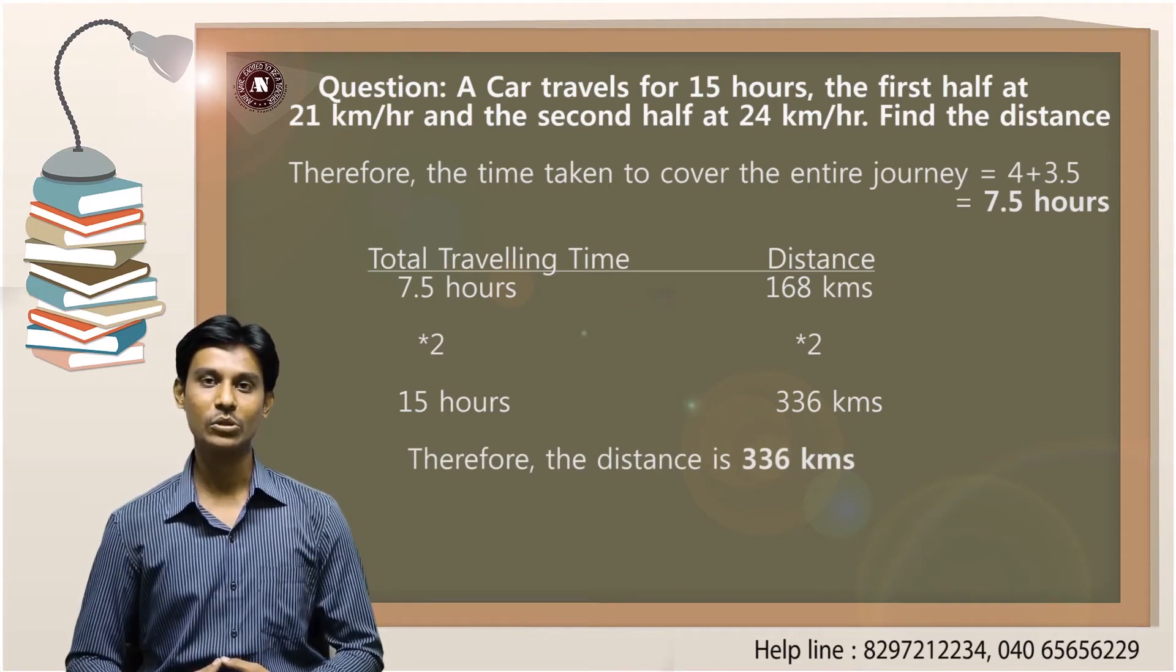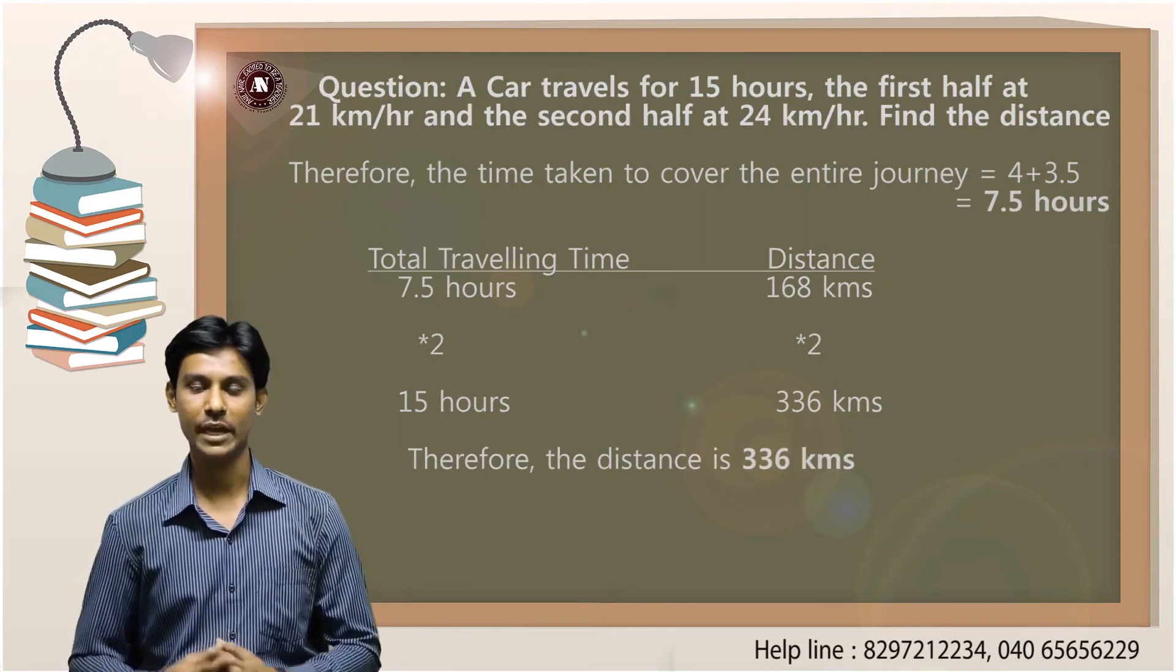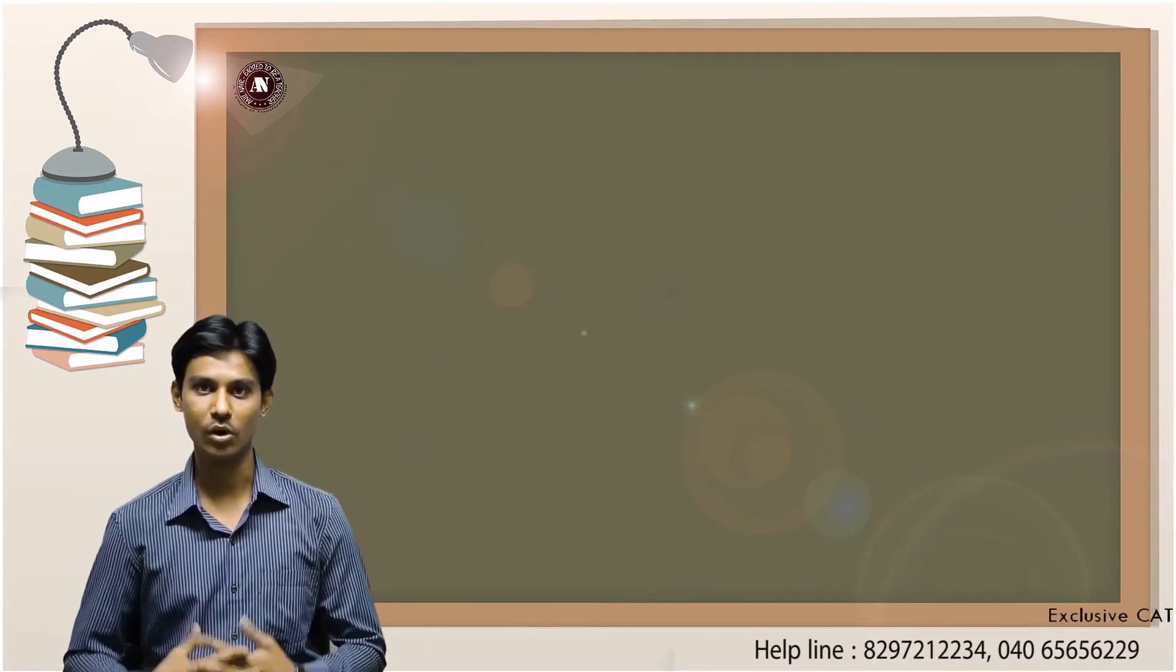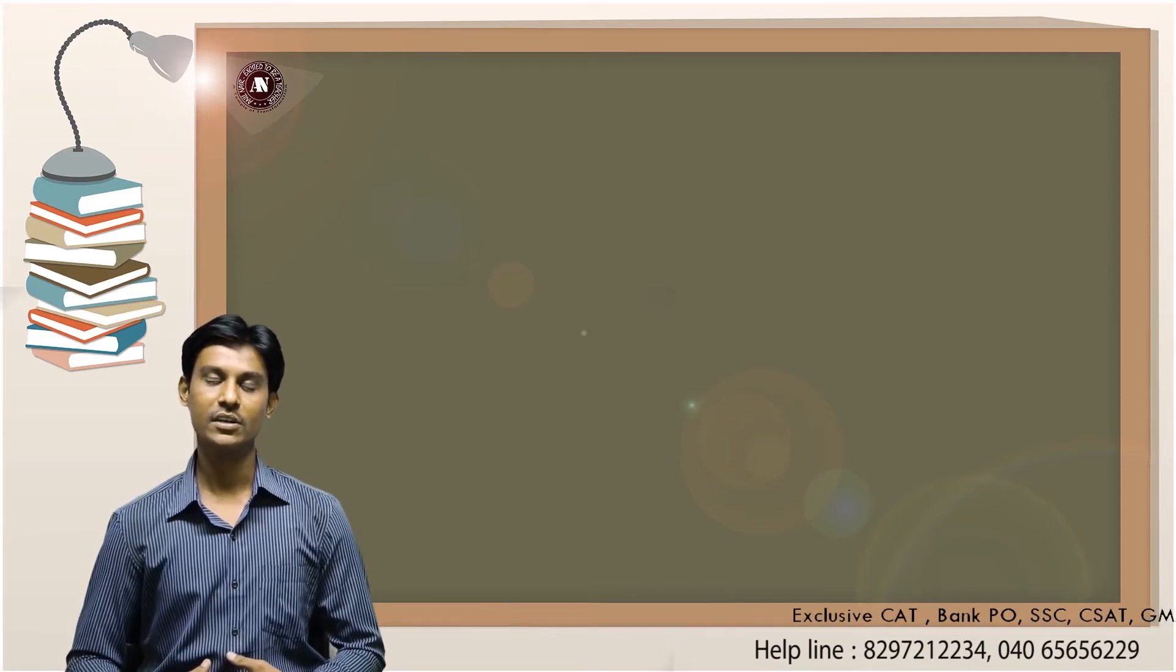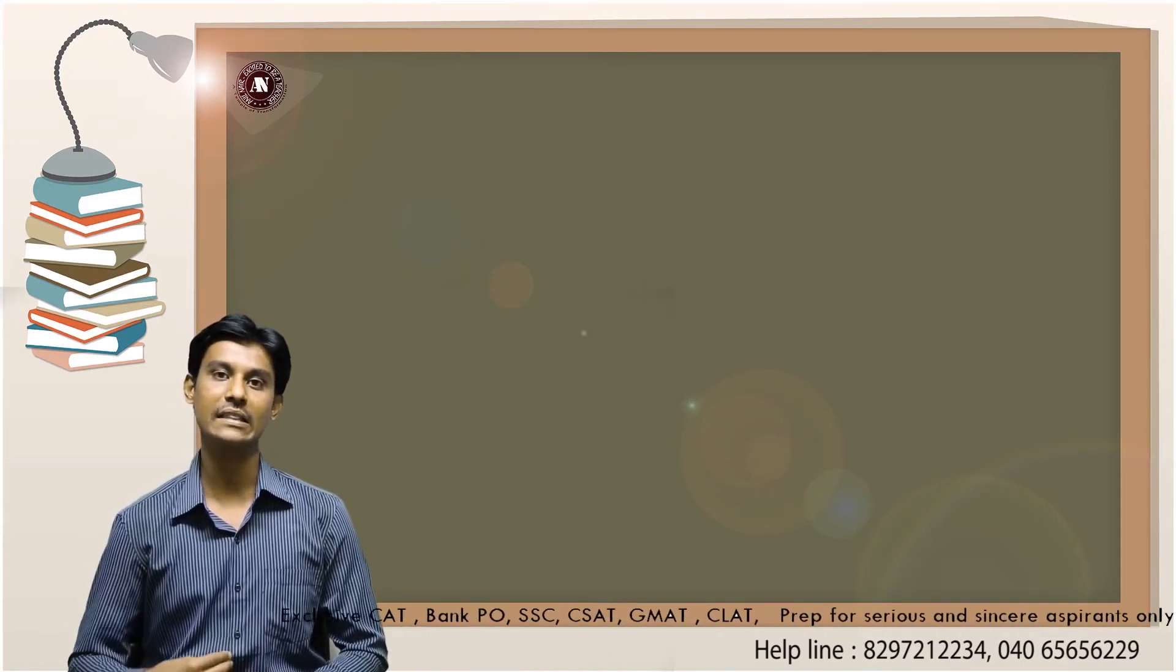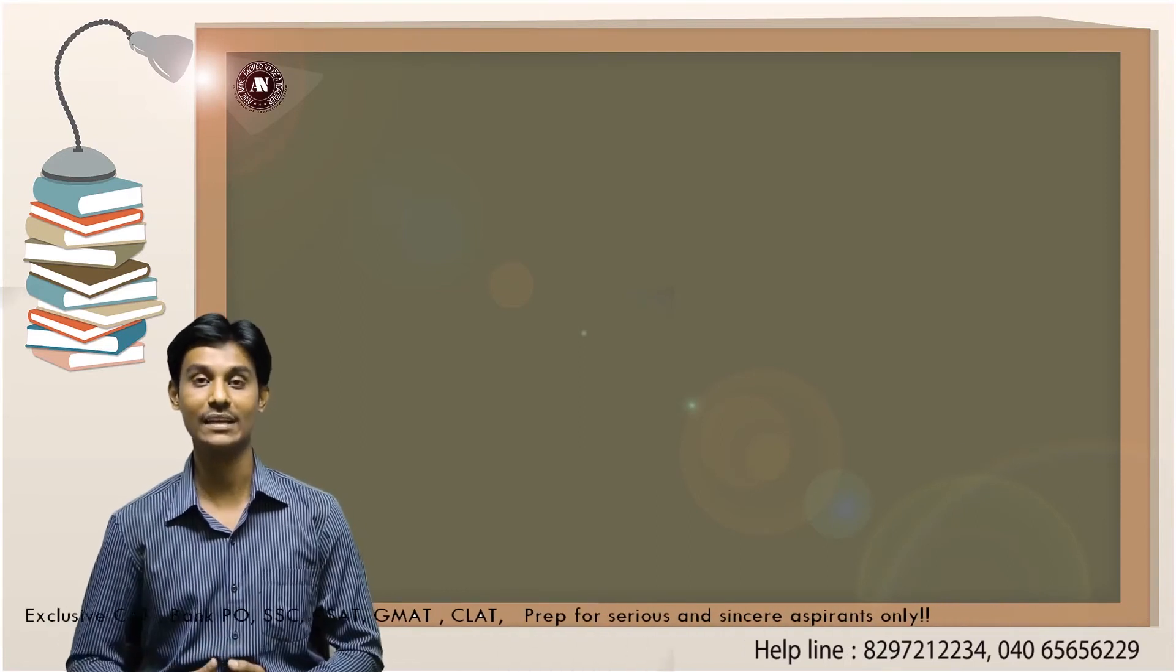That means you can solve any question based on time, speed and distance, or any other topic for that matter, without using a variable called as x. You can, instead of assuming a variable called as x, assume the distance as the LCM of the given speed. You will get the answer in lunch time.